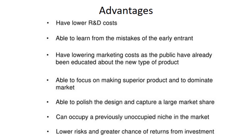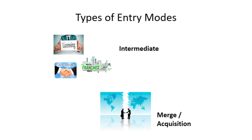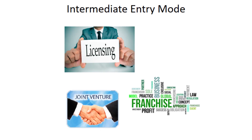We can now move on to the second strategy of entering the market: entry modes. There are mainly two types — intermediates and mergers or acquisitions. Under intermediate, there are three famous categories: licensing, franchising, and joint ventures.